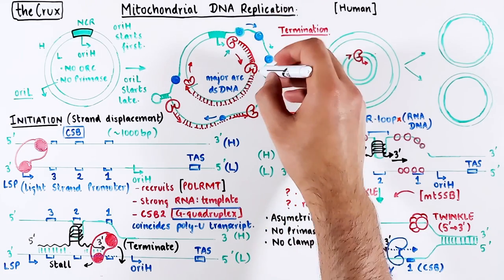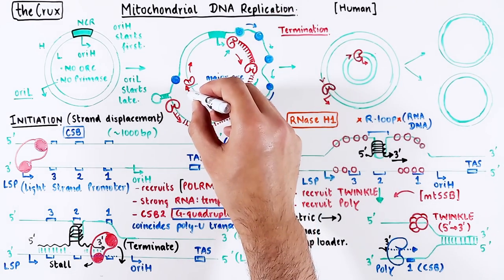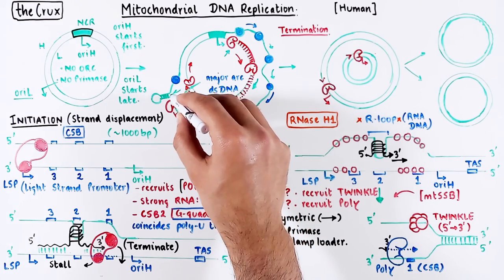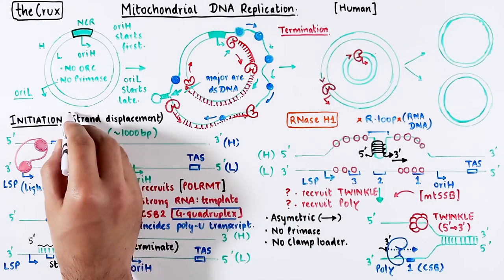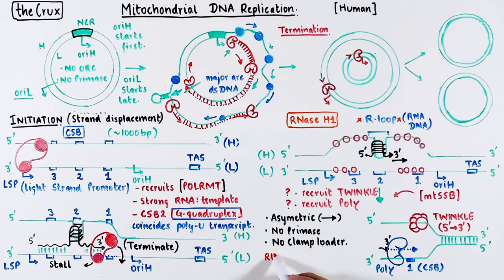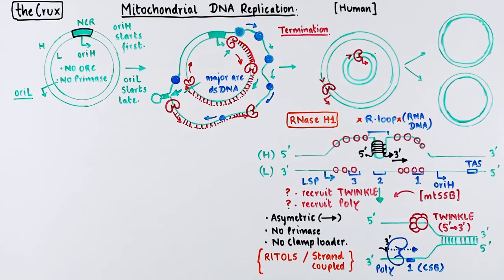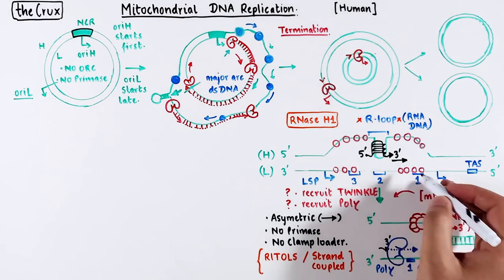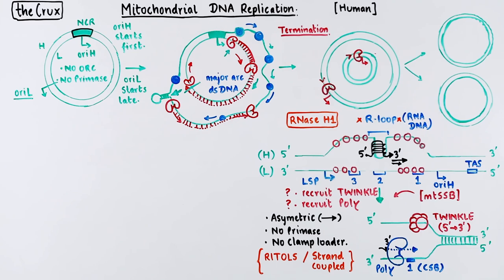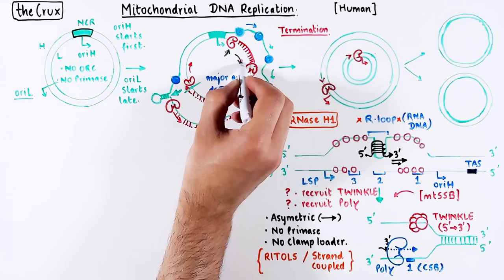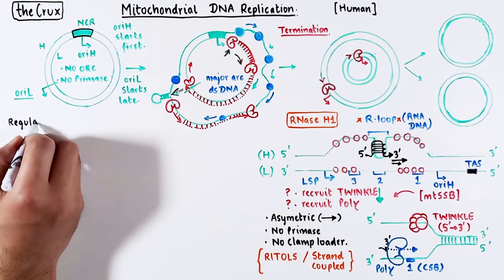Now both the helicase and polymerase start moving towards the OriL position through the major arc. This mechanism invokes strand displacement, though other models like RITOLS and strand coupling offer different views. Before the DNA polymerase can move ahead, there is a small catch: it runs into a termination sequence. So let's first understand the regulation before the polymerase gets any further.